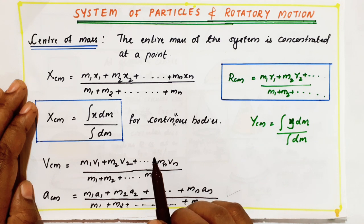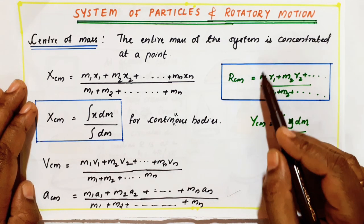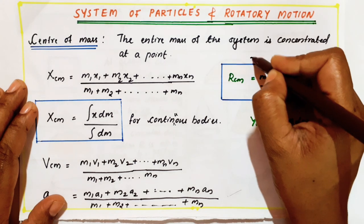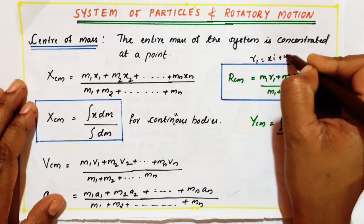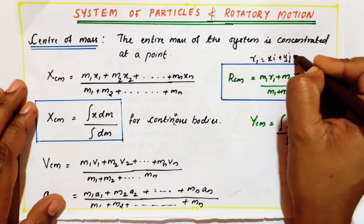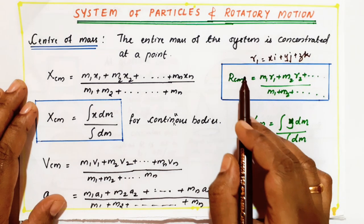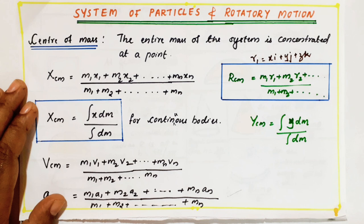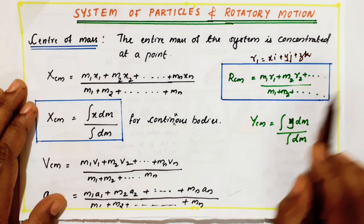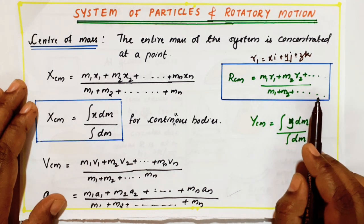In few questions, they will give in the form of position vector. Position vector means r1 will be given in the form of xi plus yj plus zk. If given in vector form, you use the equation: r_cm equals m1·r1 plus m2·r2 plus ... up to mn·rn, divided by m1 plus m2 plus ... up to mn.